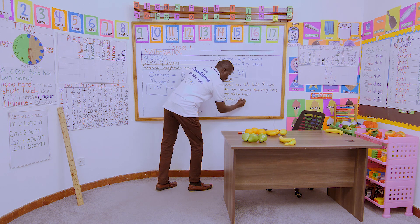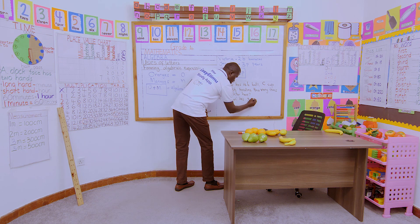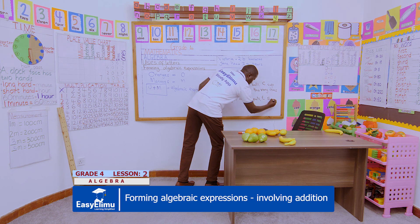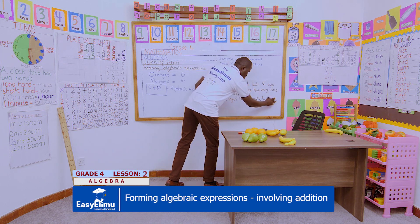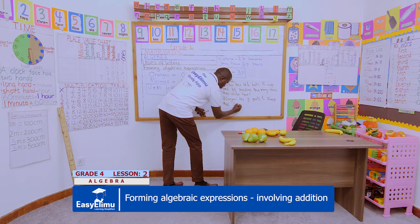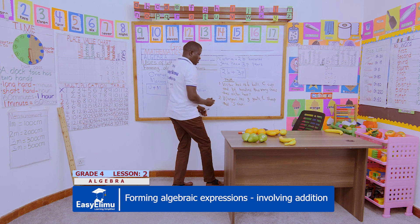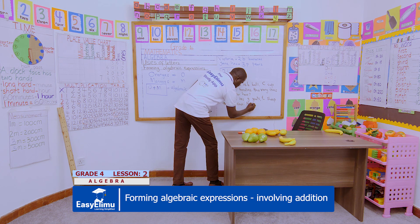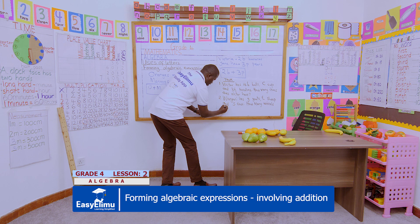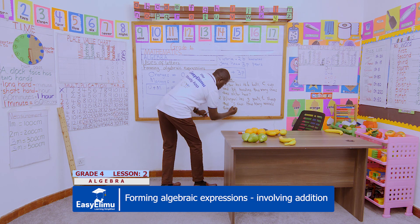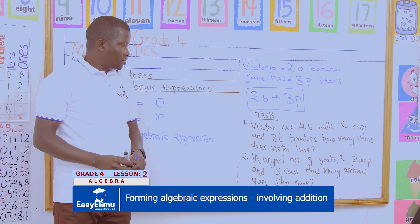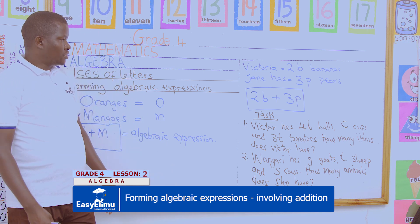Task number two: Gary has g goats, she also has t sheep, and also c cows. How many animals does she have altogether? Those are our two tasks for you to do — we are forming algebraic expressions, just as we have done in our examples.